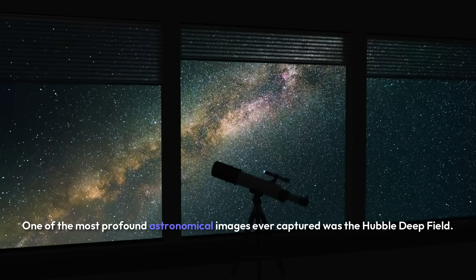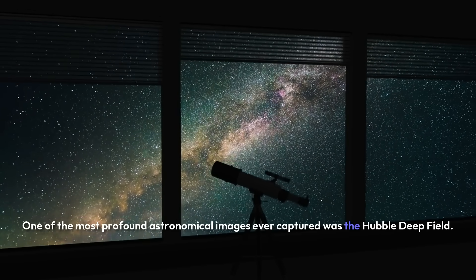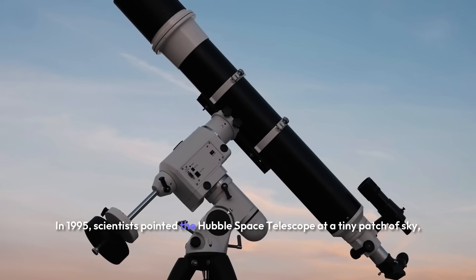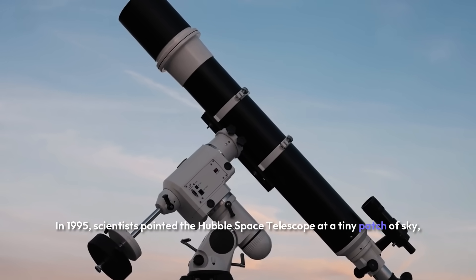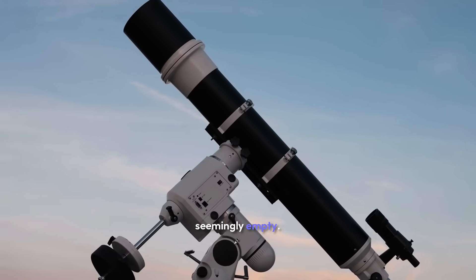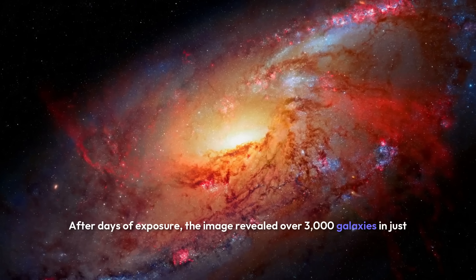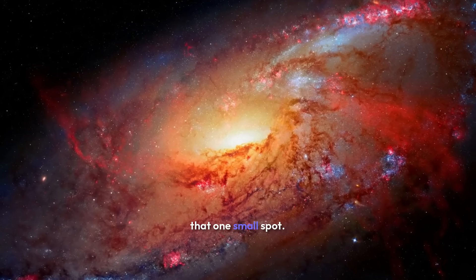One of the most profound astronomical images ever captured was the Hubble Deep Field. In 1995, scientists pointed the Hubble Space Telescope at a tiny patch of sky, seemingly empty. After days of exposure, the image revealed over 3,000 galaxies in just that one small spot.